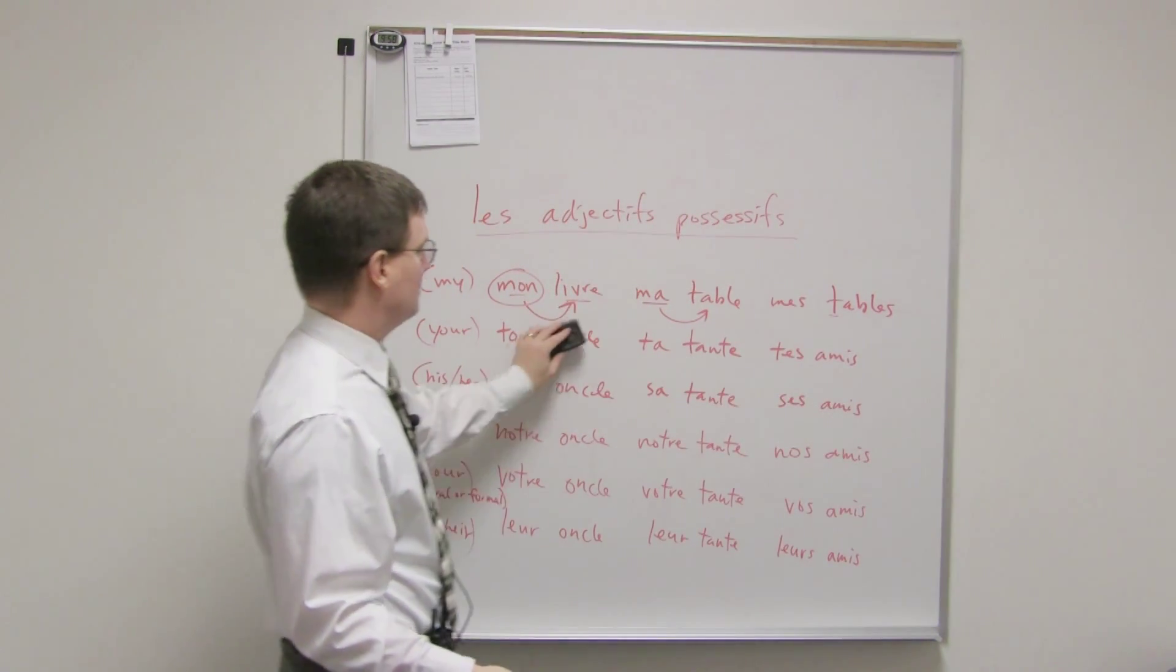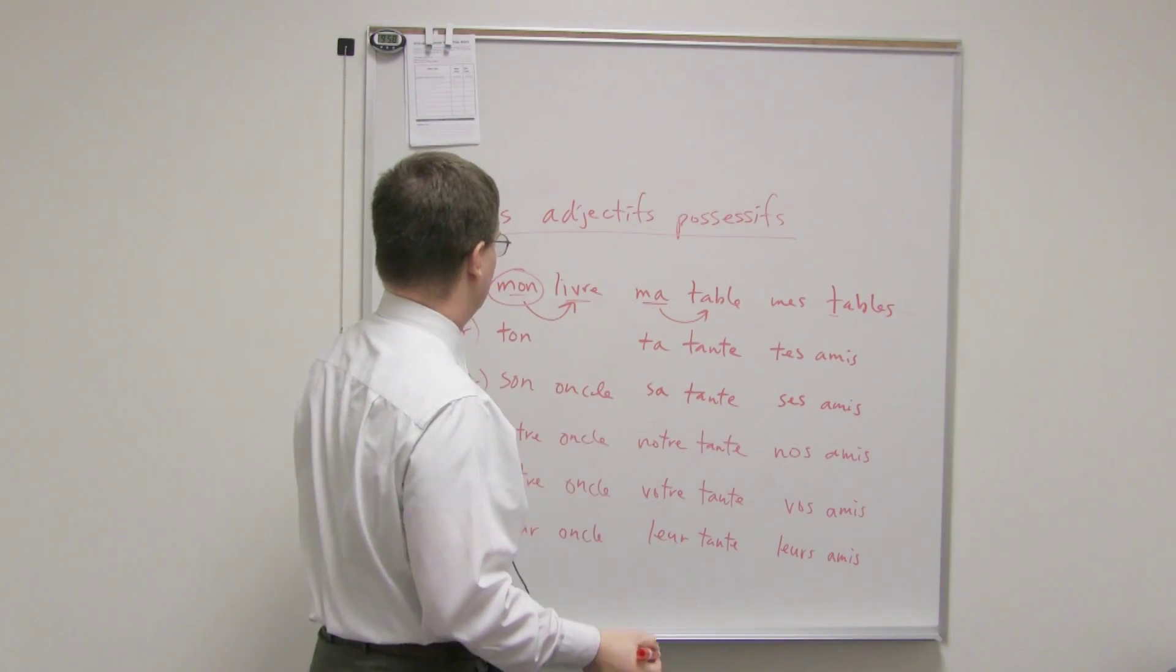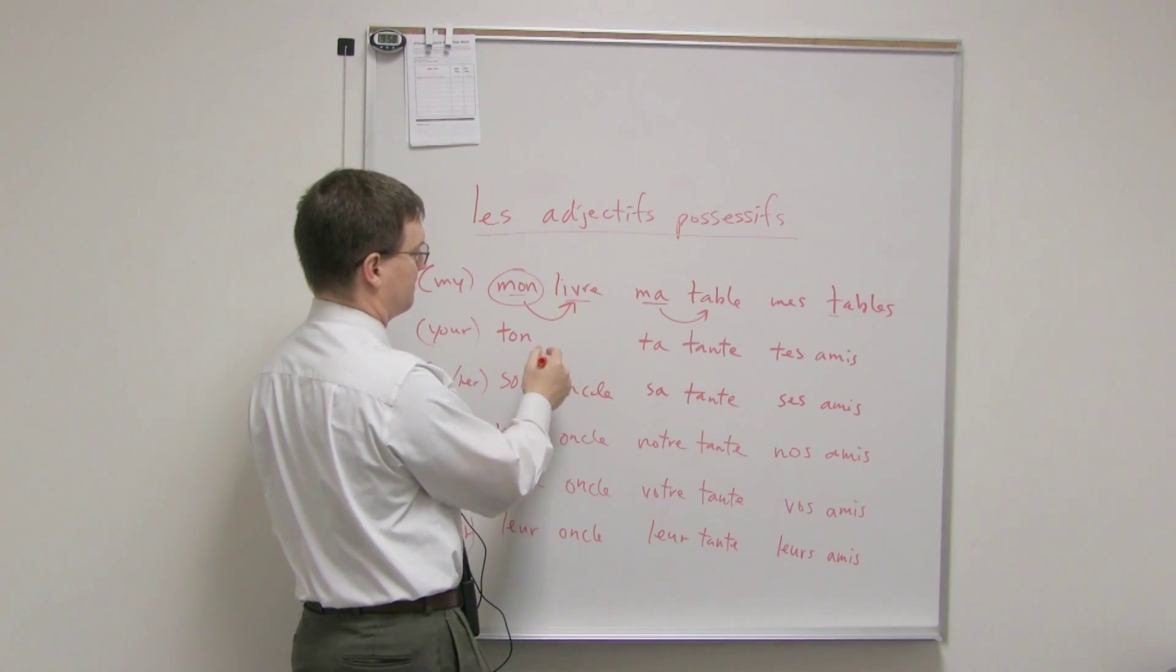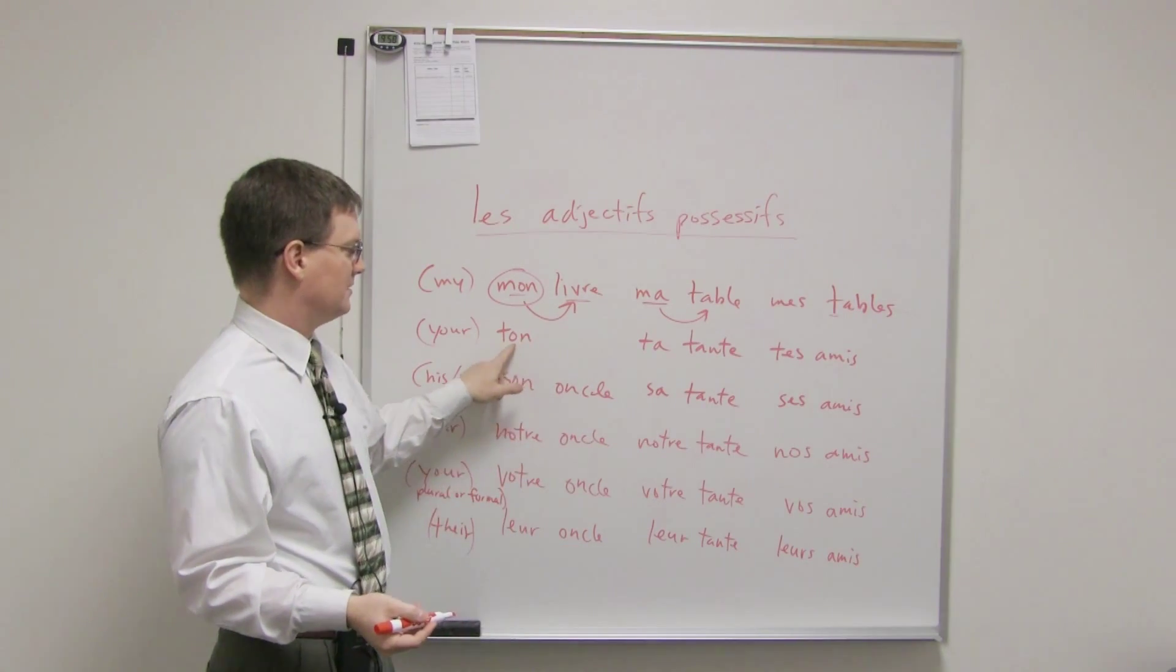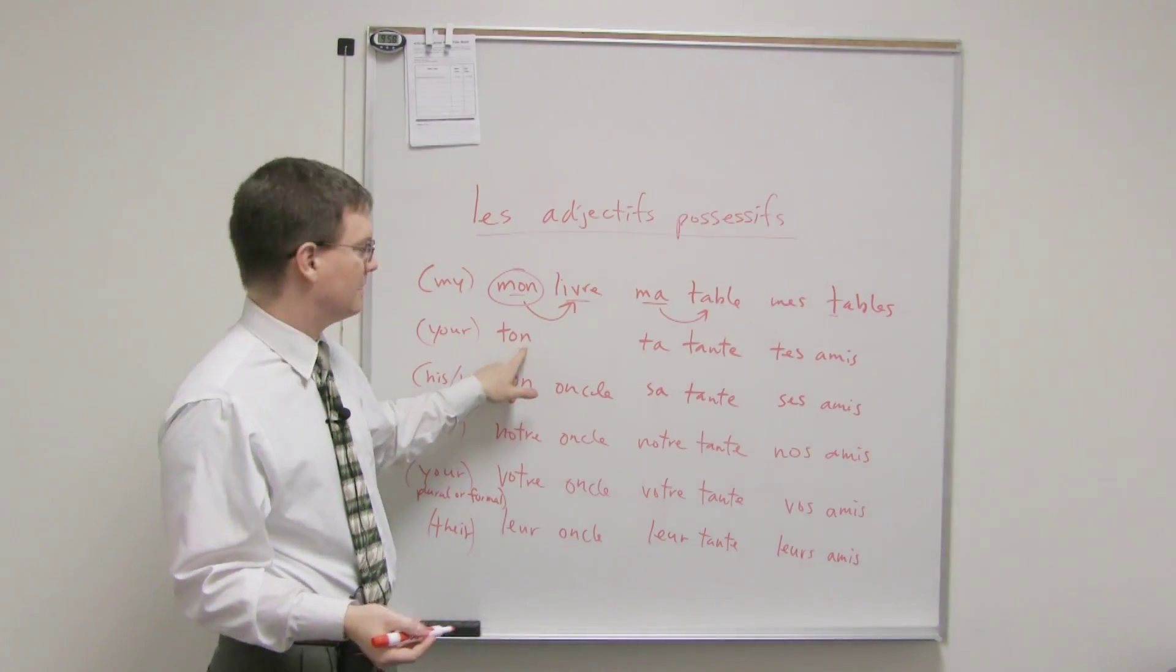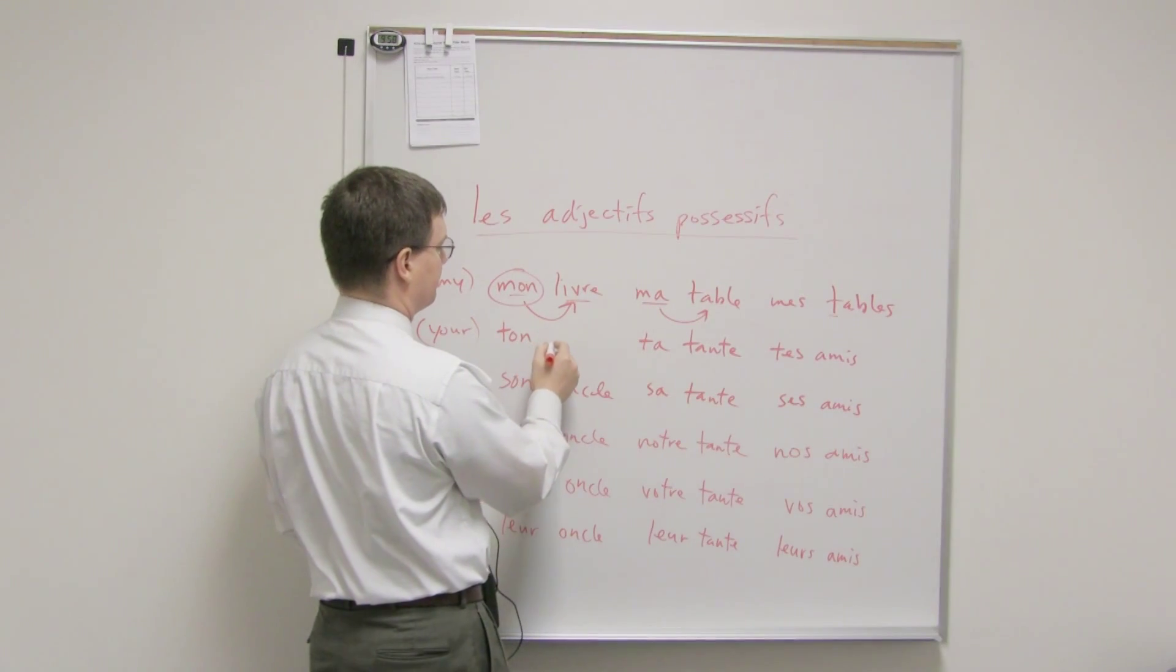Now, what do you do if you have something that starts with a vowel, but is feminine? If it starts with a vowel and feminine, you have to still use the masculine singular form here. So, for example, assuming that the item is singular as well.